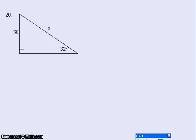So here in this case, it looks like we're going to go from the perspective of the 32, which means the 30 is my opposite and the X is my hypotenuse, and SOHCAHTOA would tell us that this is a sine because sine is opposite over hypotenuse.